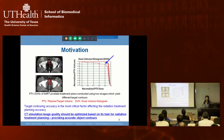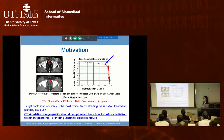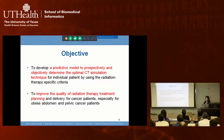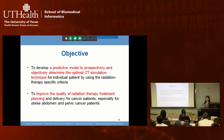The CT image quality must be optimized based on the task for radiation therapy. When acquiring CT images, parameters like KVP, mA, and collimator settings affect image quality. The objective is to develop a predictive model that can prospectively and objectively determine the optimal CT simulation technique for each individual patient based on radiation therapy criteria—especially for obese patients, whose image quality decreases with standard protocols.